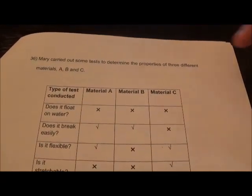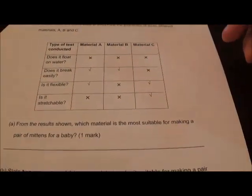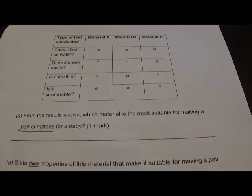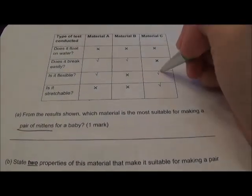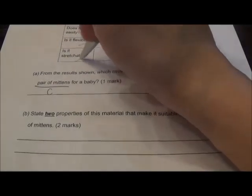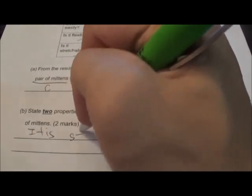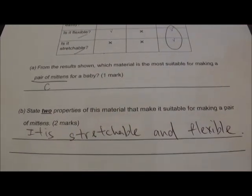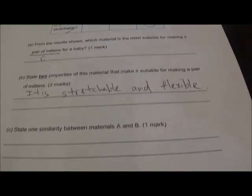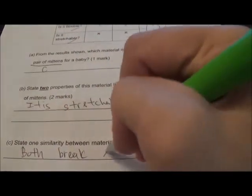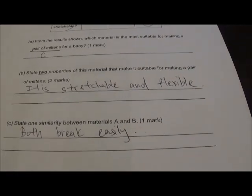Question 36: Mary carried out tests to determine the properties of three materials. Which is most suitable for making mittens for a baby? Mittens must be flexible and stretchable. Only material C fulfills this. The two properties that make it suitable are: it is stretchable and flexible. State one similarity between material A and B: both break easily.